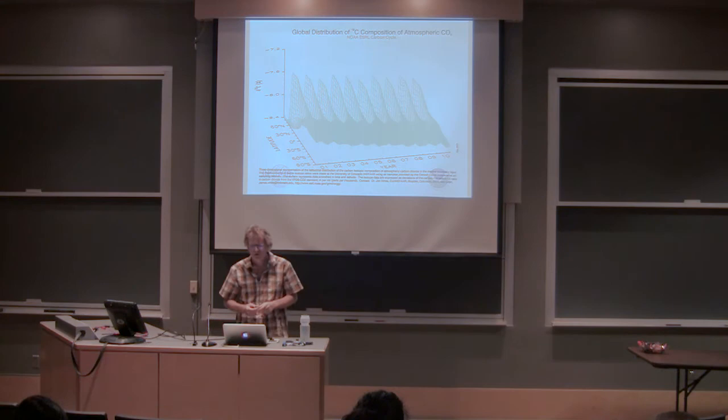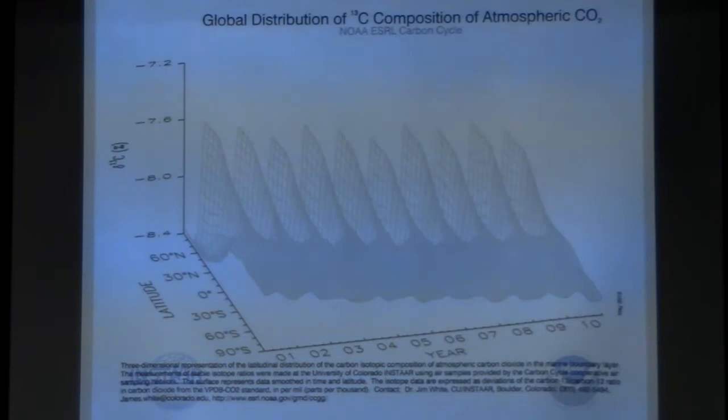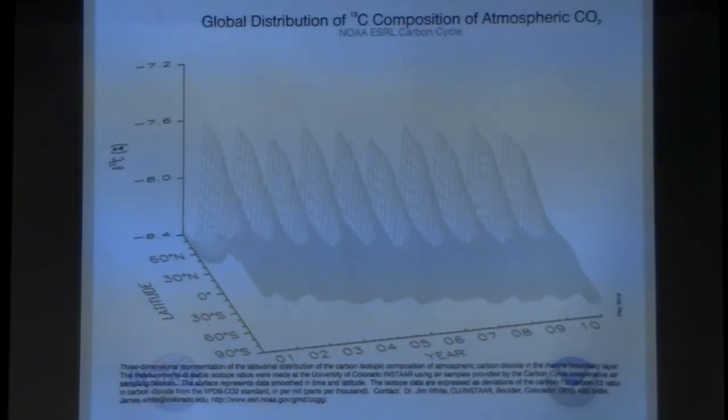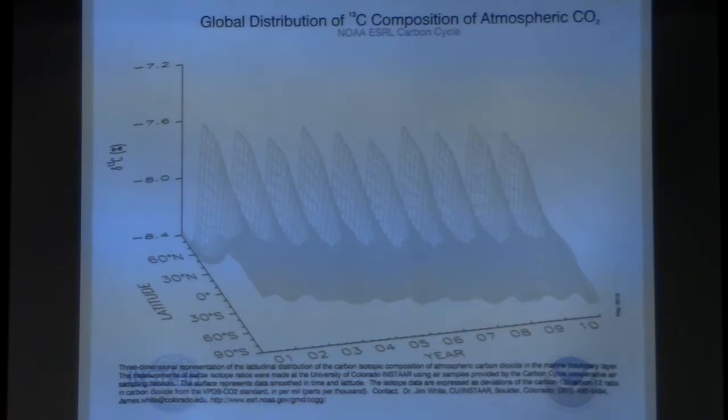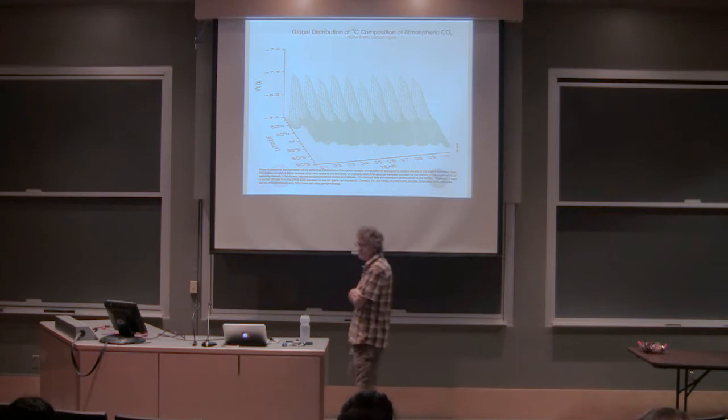On the right is the southern hemisphere version—you can see the seasonal cycles are almost entirely damped. That's at American Samoa. Using the same flask network, we can look at the global distribution of C13 of CO2 in the atmosphere. It's a similar pattern but opposite in magnitude to what we saw for CO2. The peaks for CO2 are end of northern hemisphere winter in the northern hemisphere; the valleys are end of northern hemisphere summer for CO2, and it's the opposite for C13 because of the way net land uptake discriminates. Again, a damped seasonal cycle in the southern hemisphere, out of phase by six months.